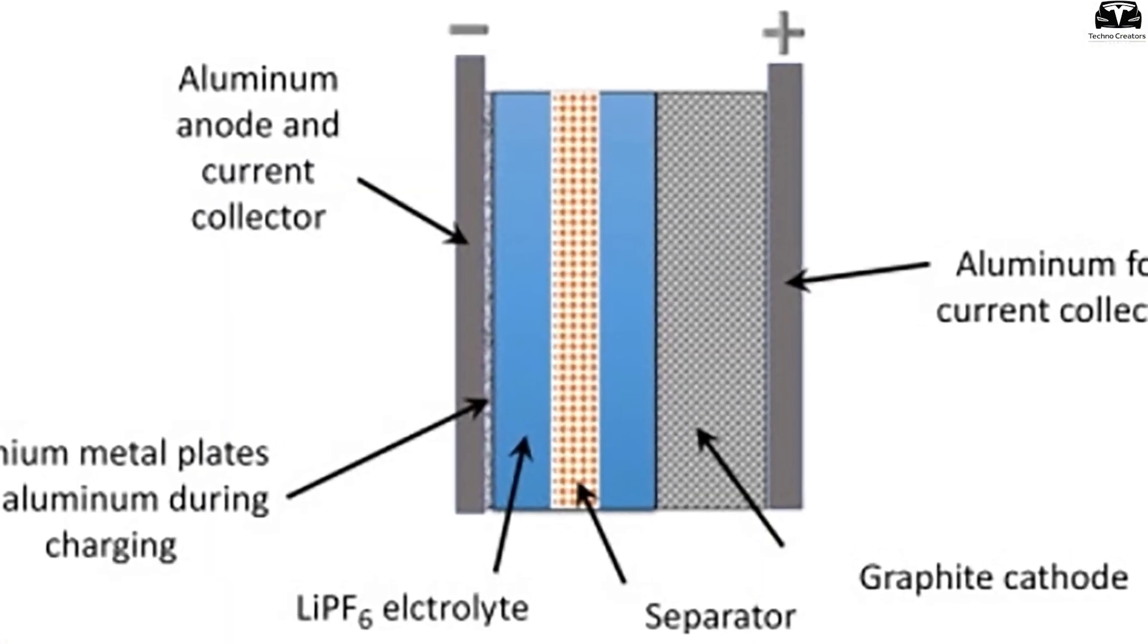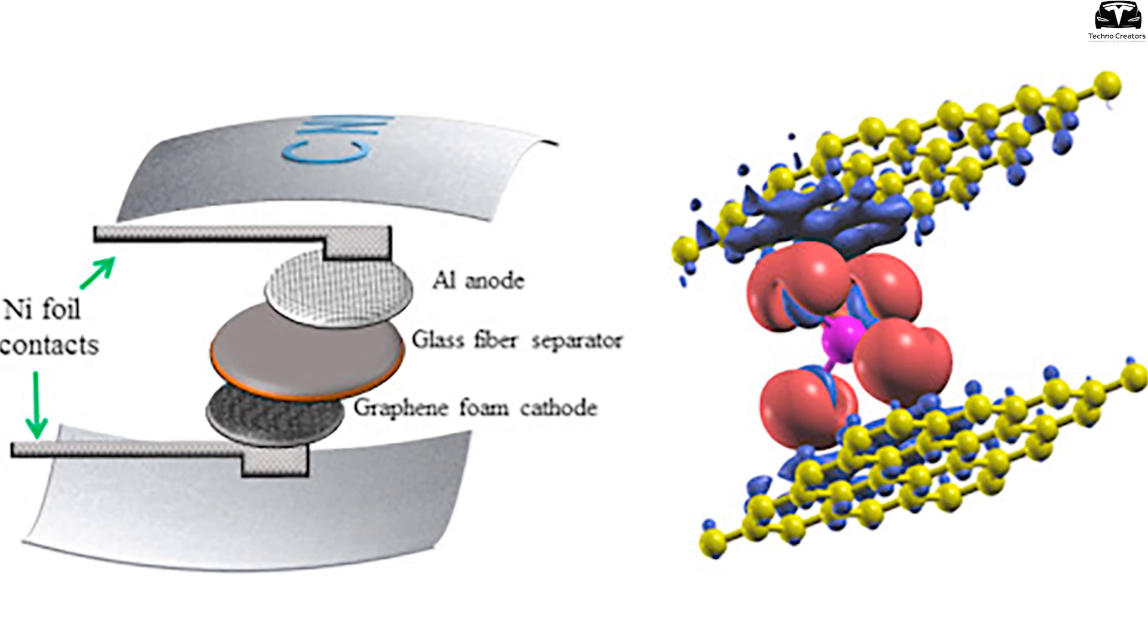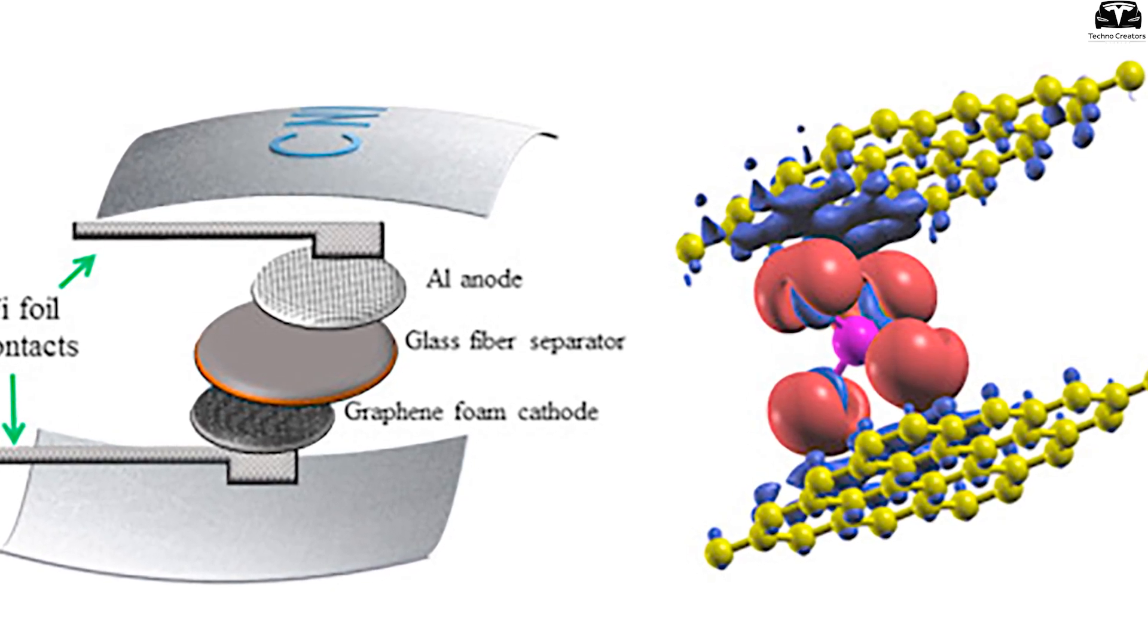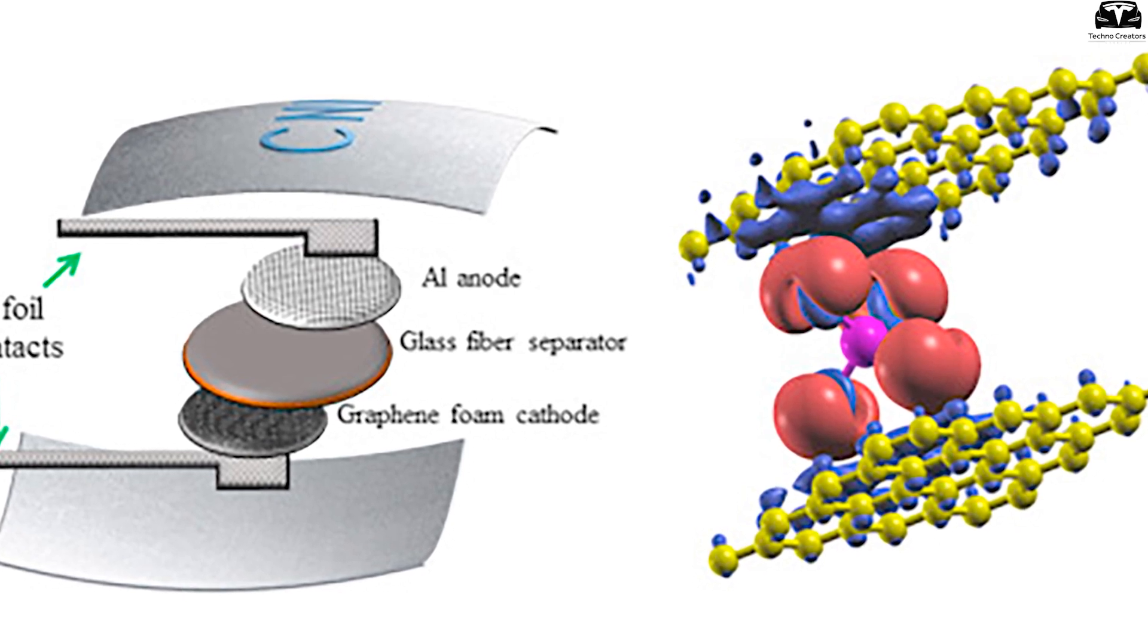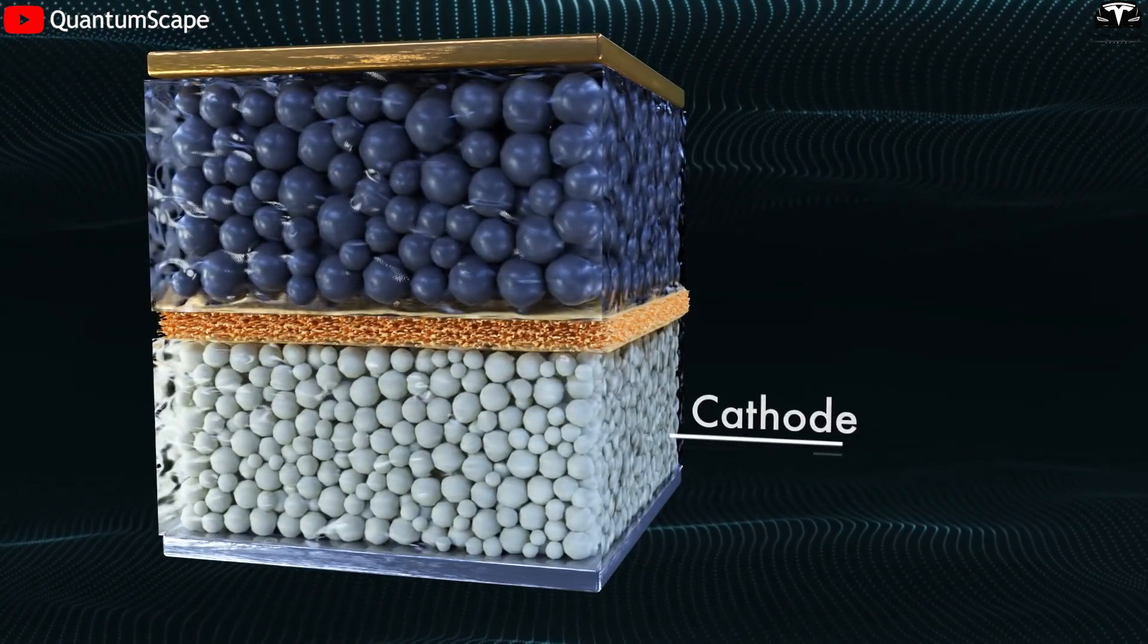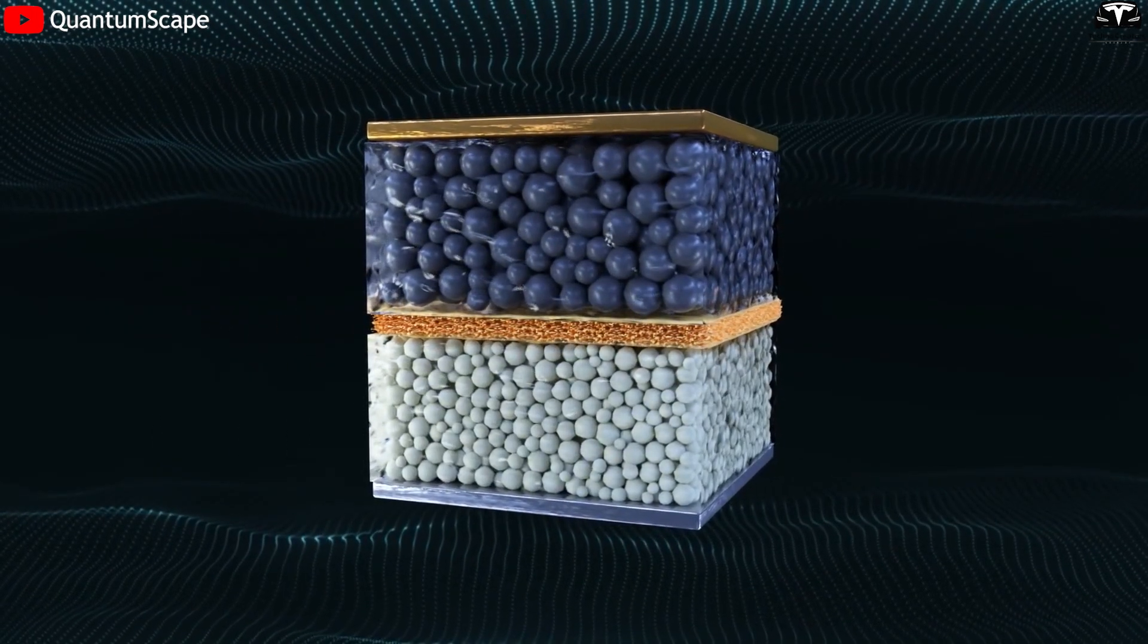The electrolyte used in G-plus AI batteries is another innovative aspect. It typically consists of an aluminum ion conducting solution that supports fast ion movement while maintaining chemical stability. The electrolyte's compatibility with both the graphene cathode and aluminum anode is essential to achieving the battery's high charging speeds and longevity.